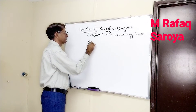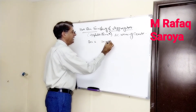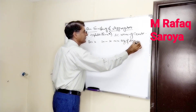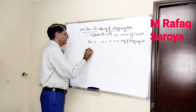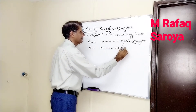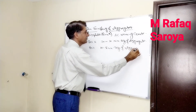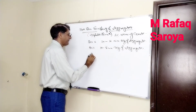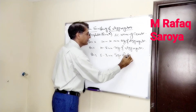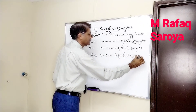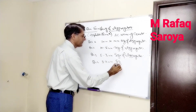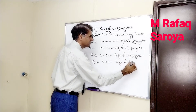For our asphalt bearing course, bin number one contains 20 to 10 mm size of aggregate. Bin number two contains 10 to 5 mm size of aggregate. Bin number three contains 3 to 0 mm size of aggregate. Bin number four also contains 3 to 0 mm size of aggregate.